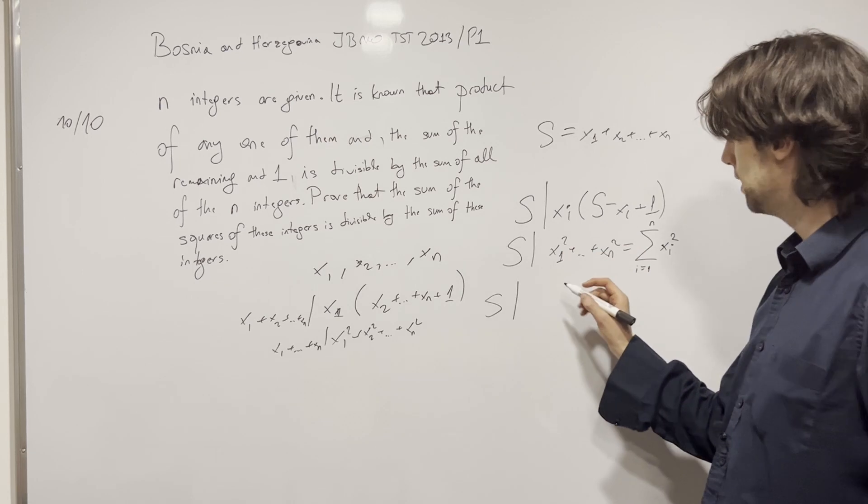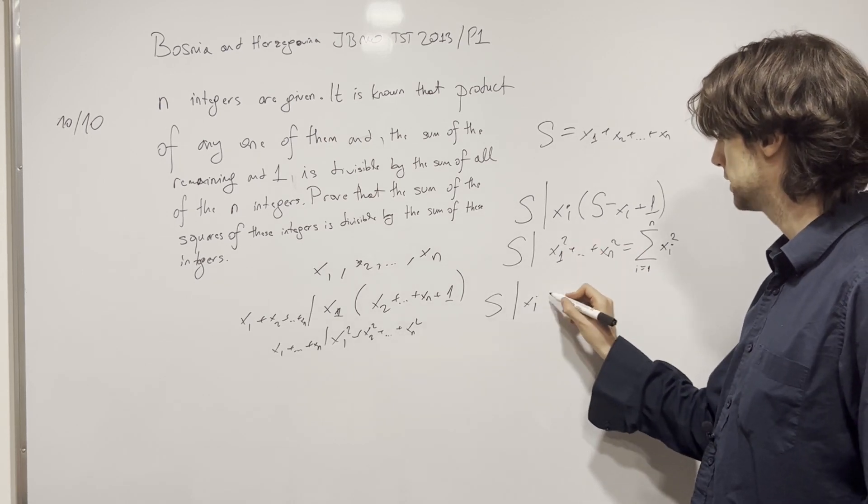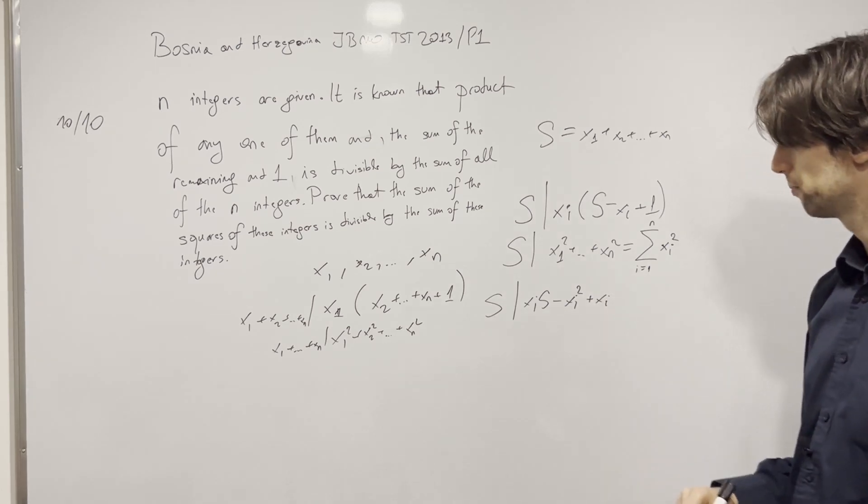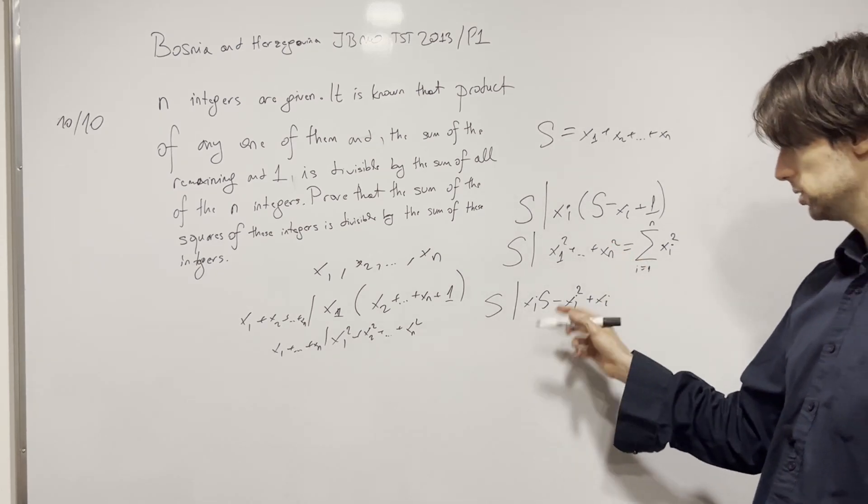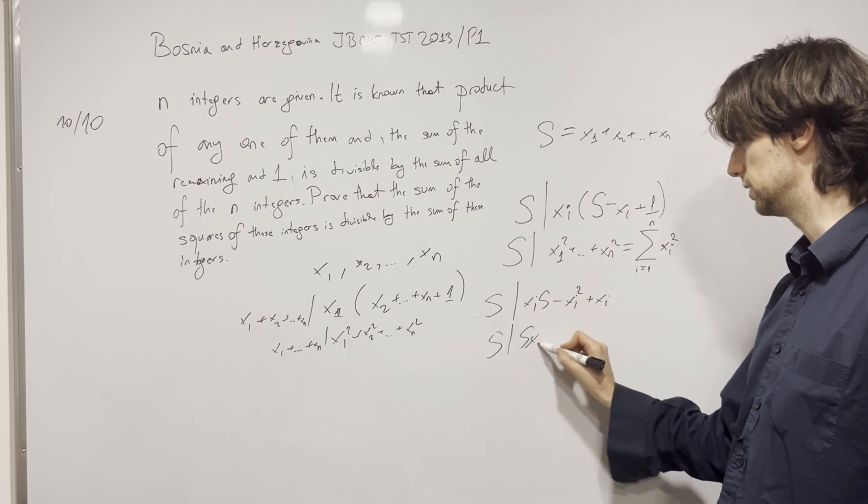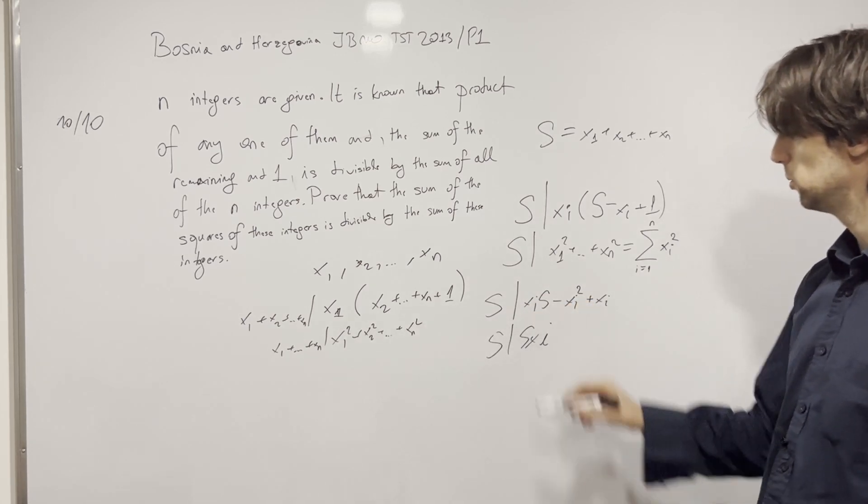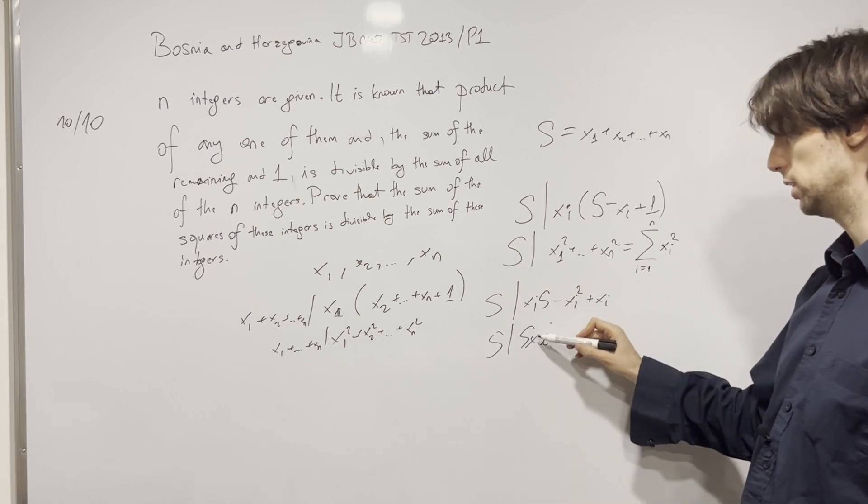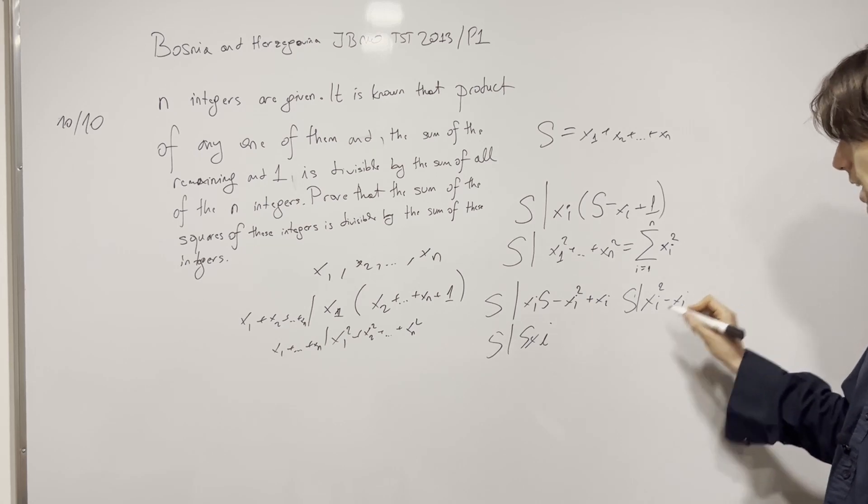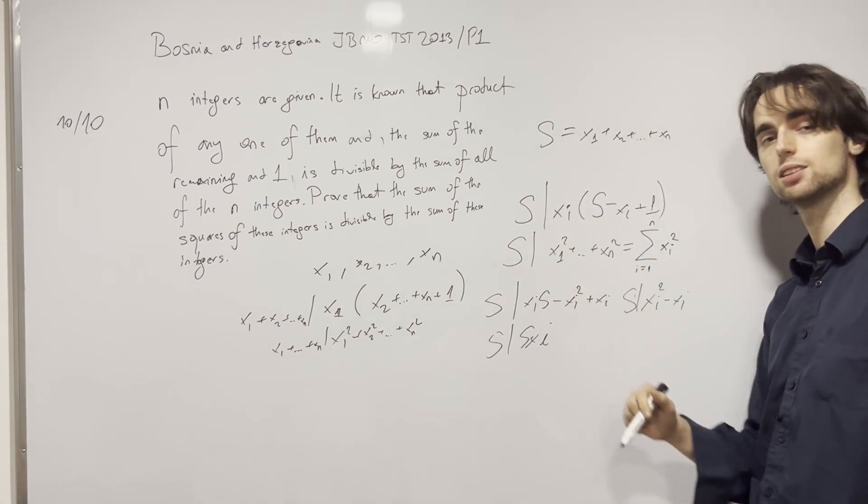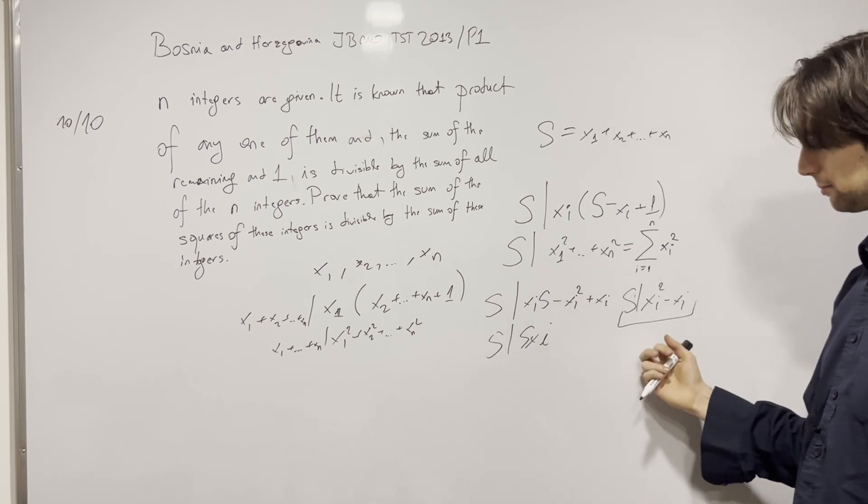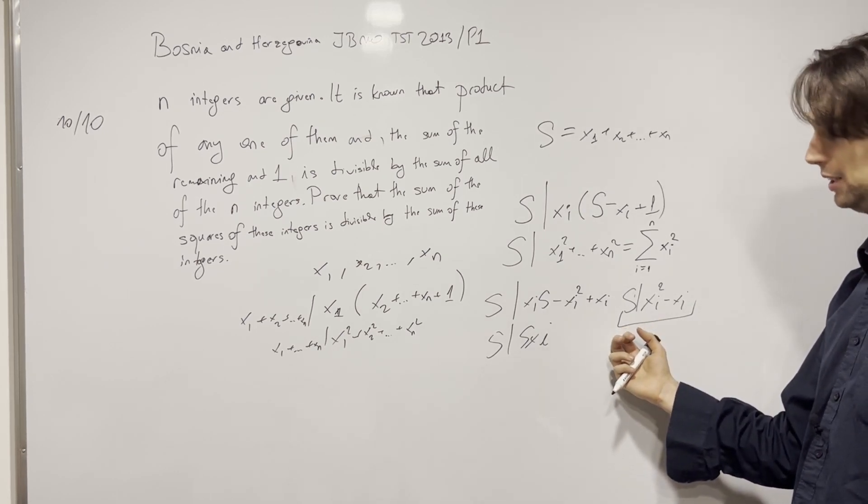And here's now what we get. We get that s divides xi times s minus xi squared. In other words, because s divides this and s divides s times xi, we can subtract this from this, and get that s divides xi squared minus xi. That's what the condition rewrites as. And now we know this. If you didn't get to here, pause for another 5 minutes.